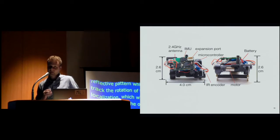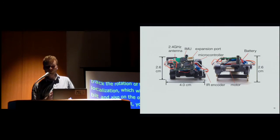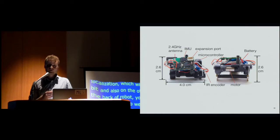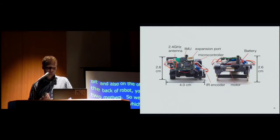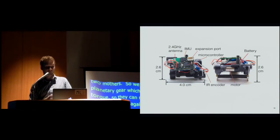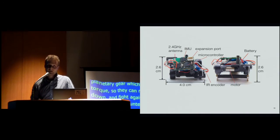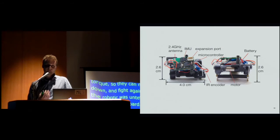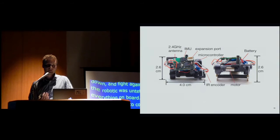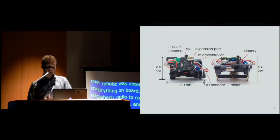So we used a small planetary gear motor which allows for high torque so they can move up and down and fight against the gravity. So the robot was untethered. It contained everything on board. So we had the 2.4 gigahertz radio to communicate to the base station and the computer. And we used a kind of ad hoc network. And so we had an IMU also to help with localization, three-axis gyroscope and three-axis accelerometer. And we had an expansion port so we can add different shields on top of the robot and extend the functionality. And the processor was an ATmega328 microcontroller.